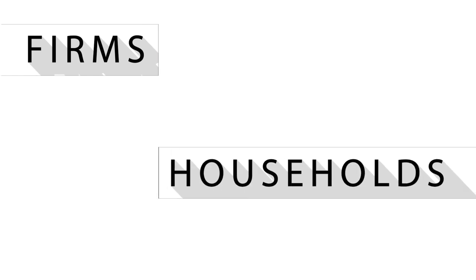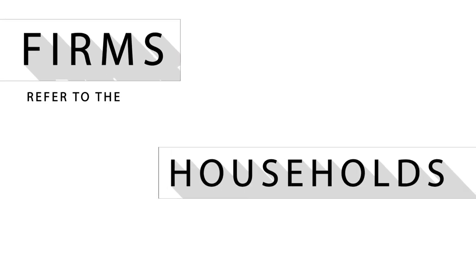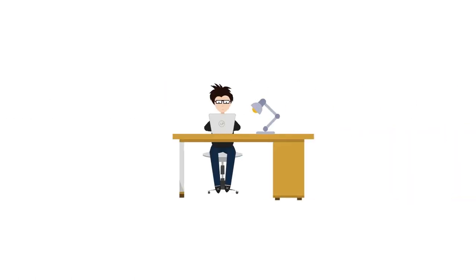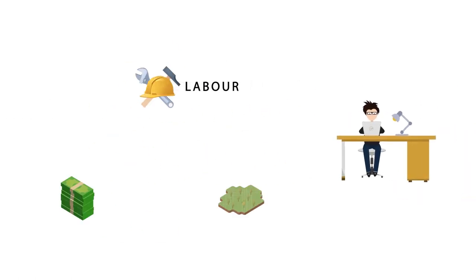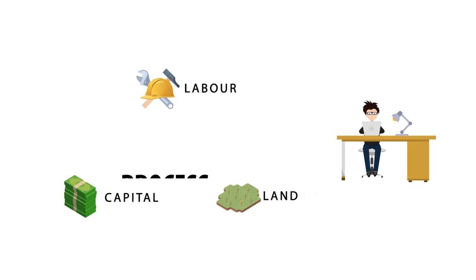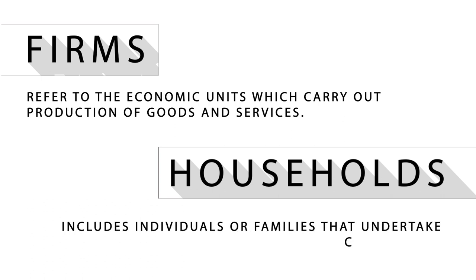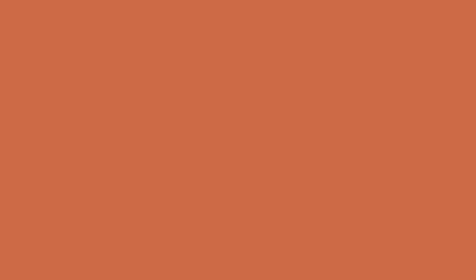Assume there are two entities: firms and households. Firms refer to the economic units which carry out production of goods and services. These are run by entrepreneurs who hire labor, employ services of capital and land, and undertake the task of production. Households include individuals or families who undertake consumption.